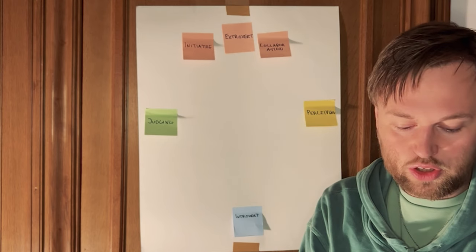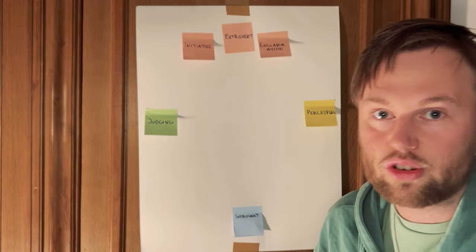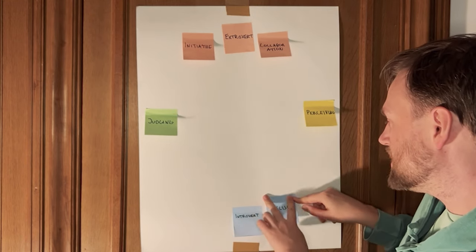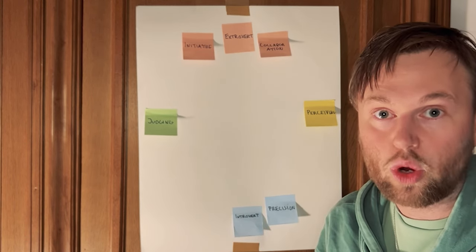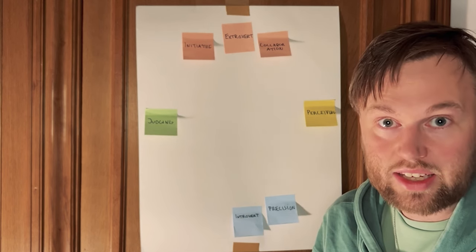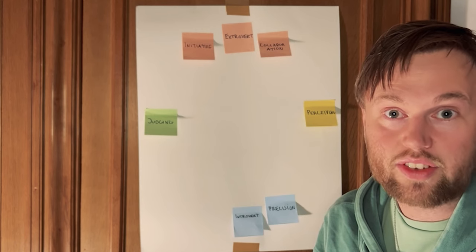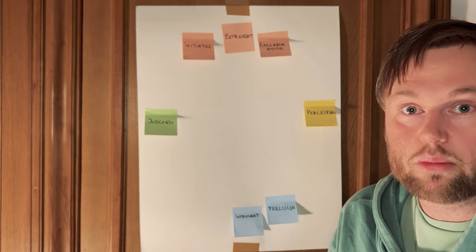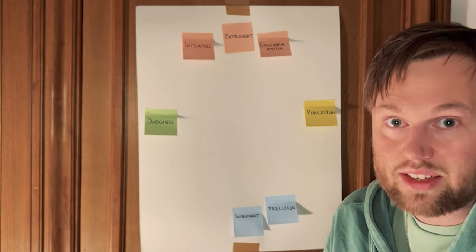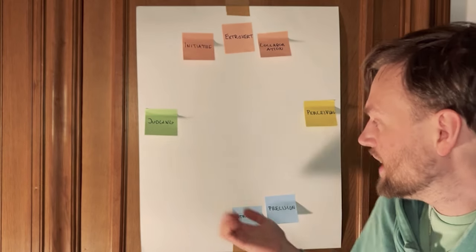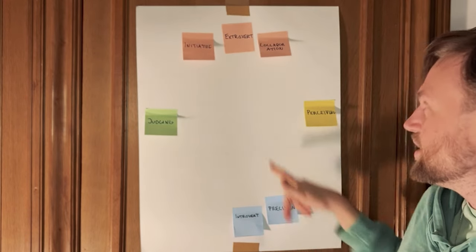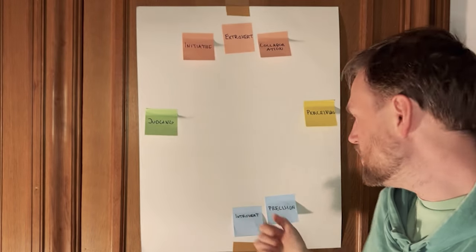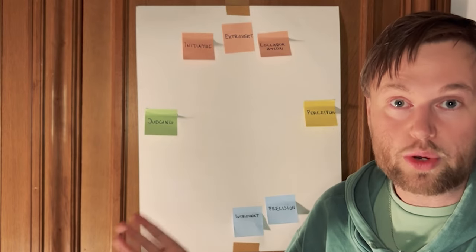Introversion carries two specific traits you can see very strongly. The first is precision — quality over quantity, wanting to get the job done correctly. Introverts have a higher innate error sensitivity, meaning they notice errors more quickly than extroverts or judging types do, and they spend more time correcting mistakes and ensuring the job is done right. This can cause them to slightly lack in initiative, meaning the two are anti-correlated: when you are being fast and taking initiative, you make more mistakes.